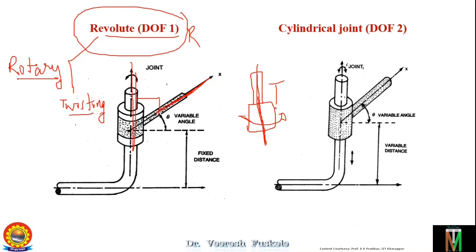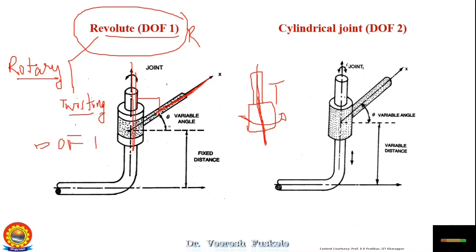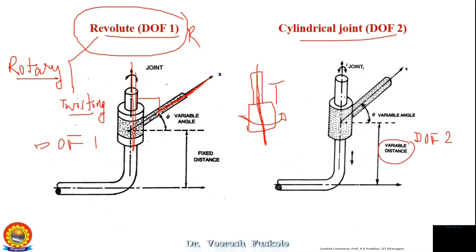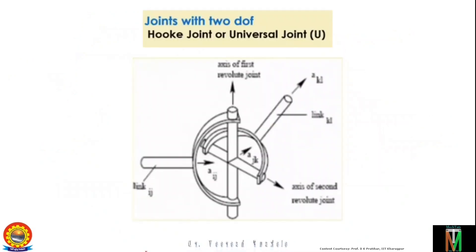If both axes are the same it will be twisting, and if the axes are perpendicular it will be revolute. The degree of freedom is one because this can only rotate about this axis. In the case of the cylindrical joint, we have degree of freedom as two — because this distance is also variable, so the cylindrical portion can move up and down and also rotate about this axis.